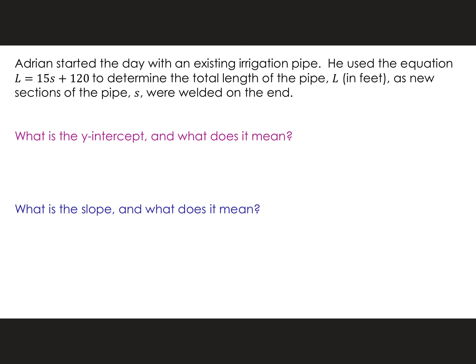Adrian started the day with an existing irrigation pipe. He used the equation L equals 15S plus 120 to determine the total length of the pipe L in feet, as new sections of pipe S were welded on the end. So what is my y-intercept? That's 120. What's my slope? 15. That's how many feet he started with — when it says he started the day with an existing irrigation pipe, that pipe was 120 feet long. Now let's look at the slope. I'm going to use the dependent-per-independent label approach. My dependent label is where L is.